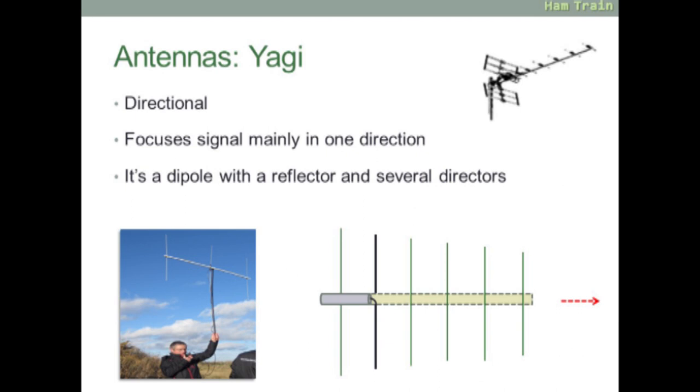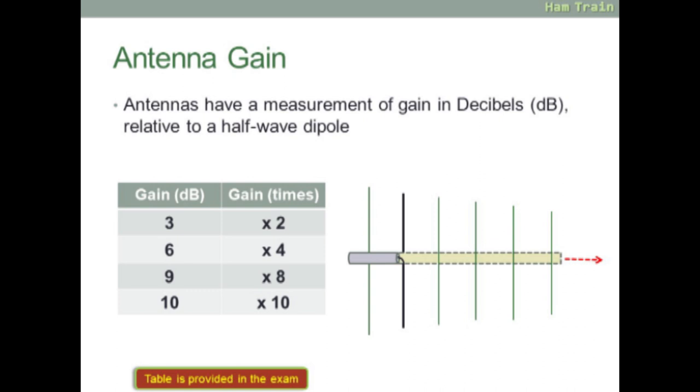And the Yagi antenna. This is a directional beam antenna. You'll recognize these on the roof of many houses in the form of a TV aerial. It's basically a dipole with a reflector at the back and several directors to focus the energy into one direction. Yagi antennas have a gain which is measured in dB. At foundation, you're required to know about antenna gain and possibly calculate it. The table is given in the exam booklet. You can see the table here. A gain of 3 dB will double the gain, 6 dB will multiply it by a factor of 4, 9 dB by a factor of 8, and 10 dB by a factor of 10. The measurement of gain is in decibels, dB, relative to a half-wave dipole.